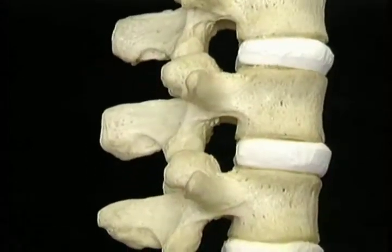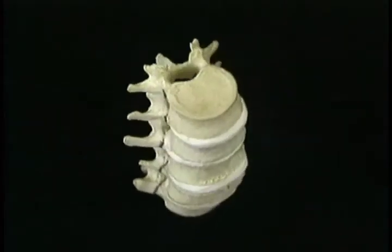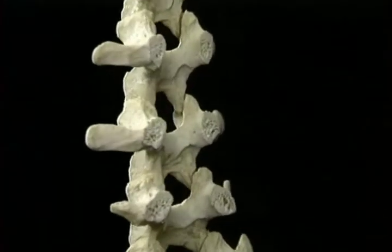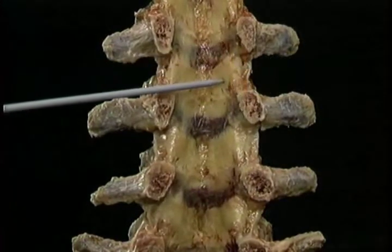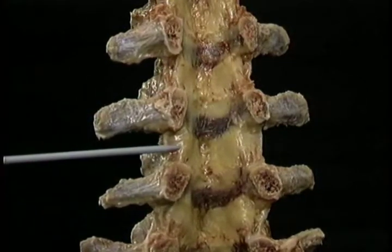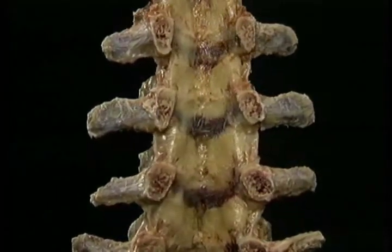The structure that chiefly limits flexion of the vertebral column is the series of short ligaments that hold the laminae together, known collectively as the ligamentum flavum. The ligamentum flavum lies on the front of the laminae, going from one lamina to the next all the way down the spine. It is made of yellowish fibroelastic tissue — hence its name, which means yellow ligament.